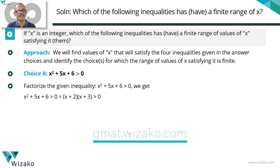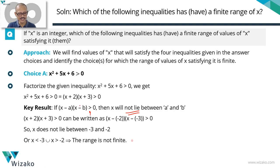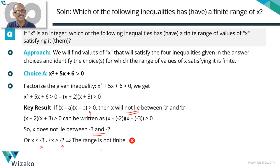To summarize option A: factorized as (x + 2)(x + 3) > 0, rewritten as (x − (−2))(x − (−3)) > 0. The key result is that x does not lie between the two roots −3 and −2, so x is either less than −3 or greater than −2. In either case, the range is infinite. Option A is not the answer.